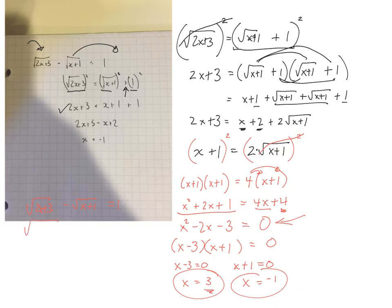So root of 2 times 3 is 6. 6 plus 3 is 9. Minus root 3 plus 1 is 4 is equal to 1. Root of 9 is 3. Root of 4 is 2. 3 take away 2 is 1. That one checks out.